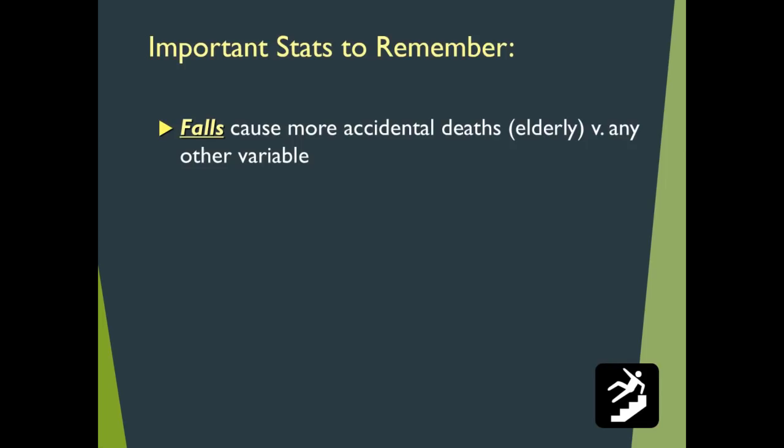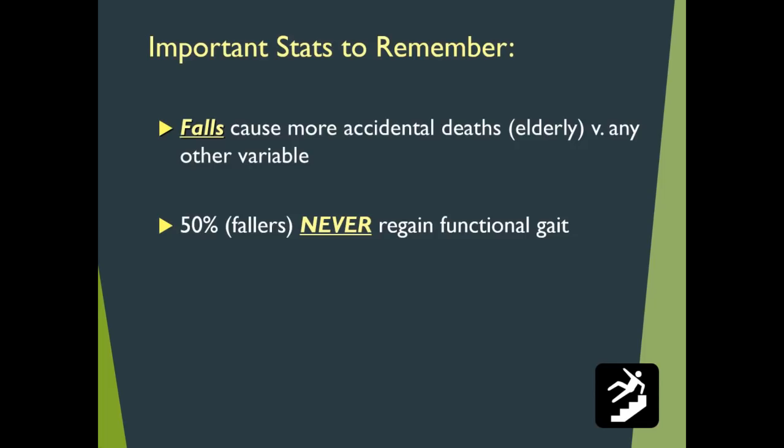Important statistics to remember: falls account for more accidental deaths in the elderly than any other variable. You now understand why a lot of elderly alter their gait patterns — many are quite fearful about falling. Of these fallers, 50 percent never regain functional gait. Think about what that means: having no functional gait means they're either confined to the bed or to the wheelchair. 53 percent of falls are due primarily to tripping.